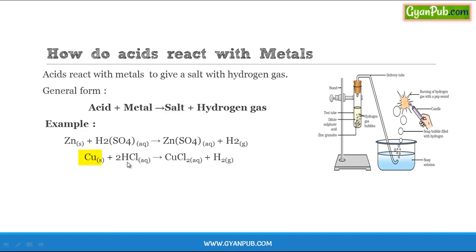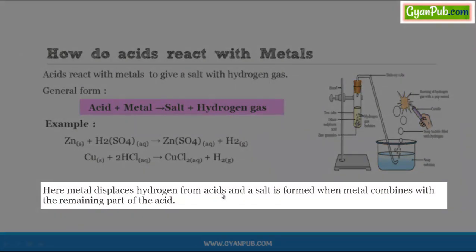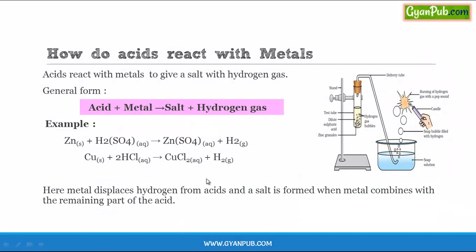Here, copper displaces hydrogen from hydrochloric acid and combines with the remaining part — chlorine — to form copper chloride, which is a salt, and the separated hydrogen is evolved as hydrogen gas. In summary, in acid-metal reactions, the metal displaces hydrogen from the acid, and a salt is formed when the metal combines with the remaining part of the acid.